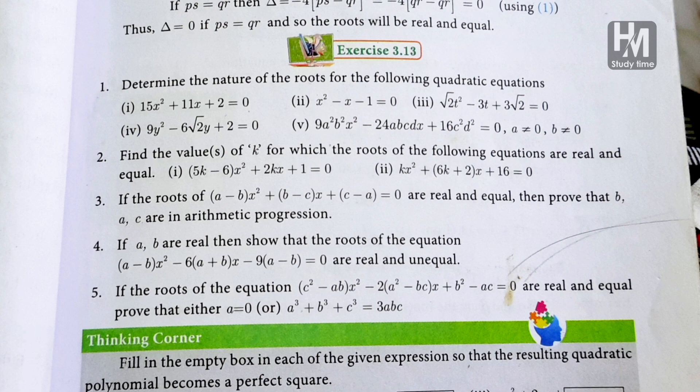If the roots of the equation are real and unequal, then prove that either a = 0 or a³ + b³ + c³ = 3abc. Then the third question is plus the second question is 1 or 2 mark.